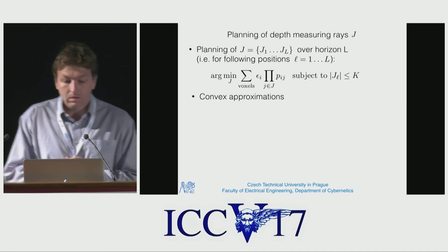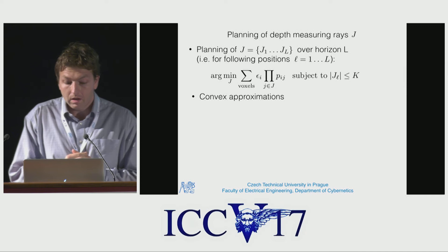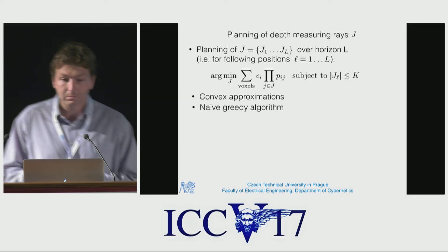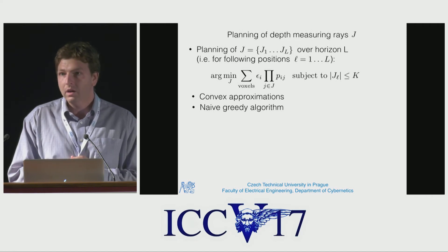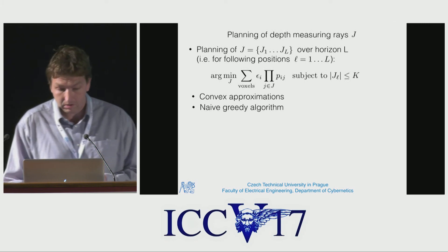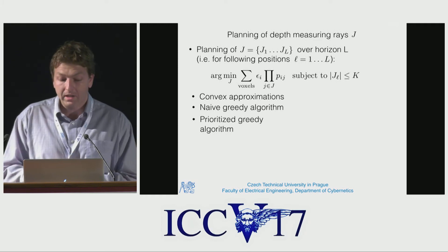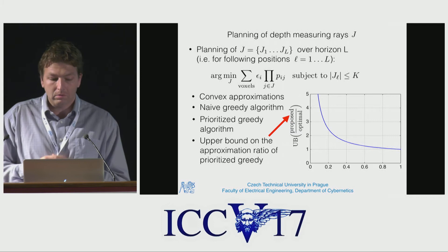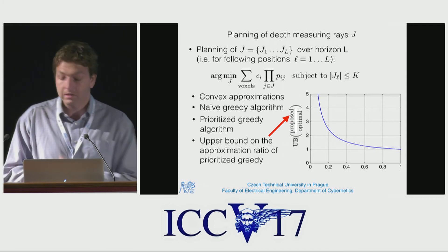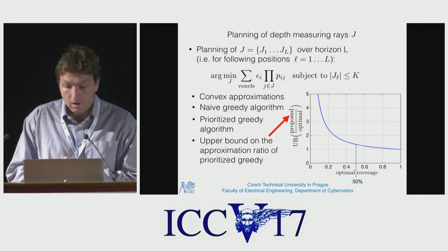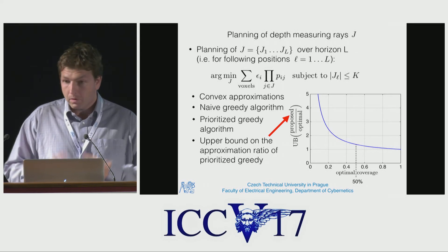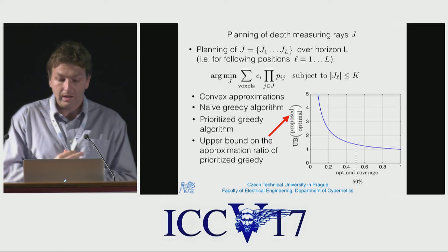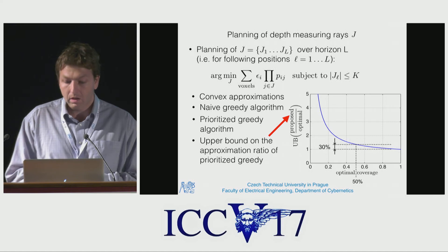This is quite a complex combinatorial task. We tried several convex approximations but none was sufficiently convincing compared to a naive greedy algorithm. In addition, even the naive greedy algorithm is quite time consuming because we have millions of voxels and hundreds of thousands of rays. We therefore proposed a prioritized greedy algorithm which is approximately 50 times faster than the naive greedy algorithm. We also derived an upper bound on the approximation ratio of the proposed prioritized greedy algorithm as a function of the optimal coverage. For example, if the optimal subset of rays can cover 50% of voxels, then the proposed prioritized greedy is not worse by more than 30% with respect to the optimum.